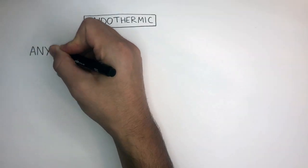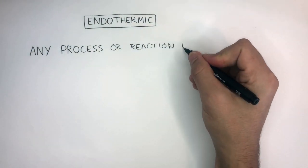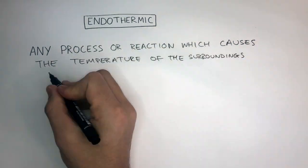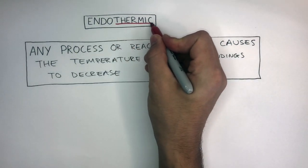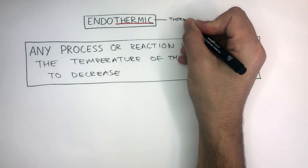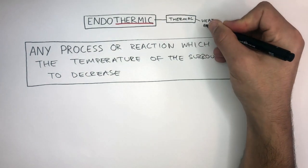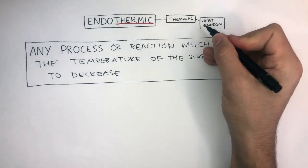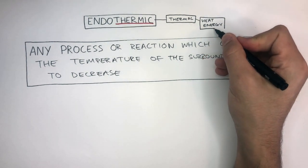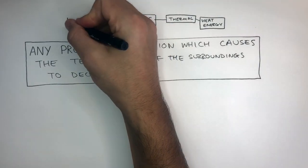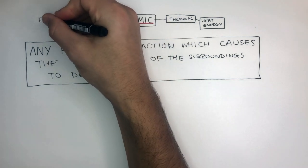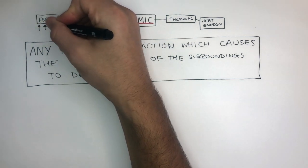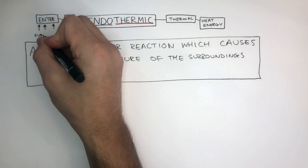Endothermic is any process or reaction which causes the temperature of the surroundings to decrease. The word thermic comes from the word thermal, and thermal means heat energy. So you can think of the word thermic as just meaning heat energy. Endo comes from the word in, which means to enter. So these lines represent how energy is being taken in from the surroundings.